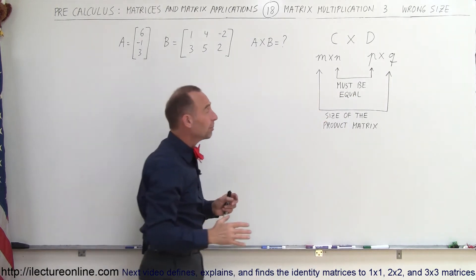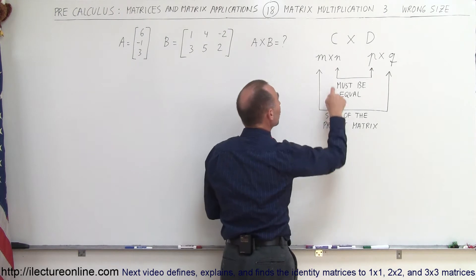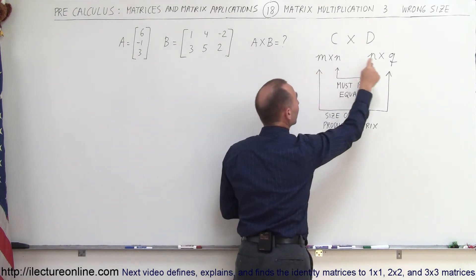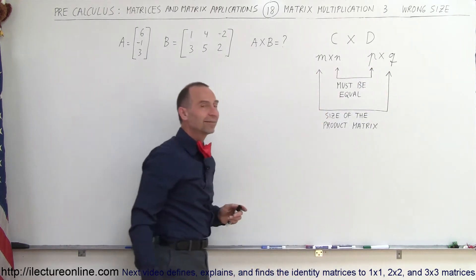The size of the product matrix will be equal to the number of rows of the first matrix times the number of columns of the second matrix.